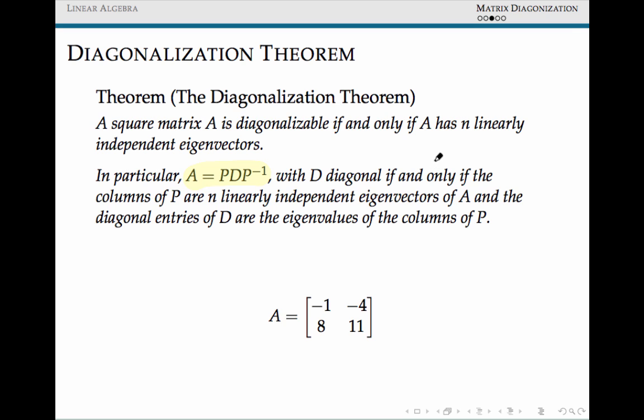And the only condition we need for a matrix to be diagonalizable is that A has N linearly independent eigenvectors, where this N is whatever the dimension of our matrix A is. So if A is an N by N matrix, we need a basis. Essentially this says that our eigenvectors are going to have to span a basis for the space that A is a linear transformation of.